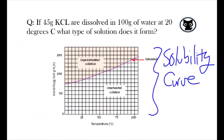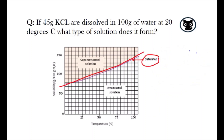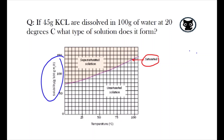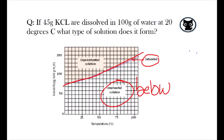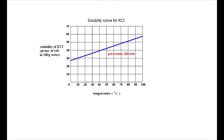To determine what kind of solution we have, we can use a solubility curve for KCl. A solubility curve helps plot the relationship between temperature and solubility of a particular solute. A line on the curve represents a saturated solution, with the x-axis representing the temperature of the solution, and the y-axis representing the solubility in terms of the mass of the solute per 100 grams of water. Anything above the saturated line is said to be supersaturated, while any point below is unsaturated. Looking at the solubility curve for KCl, we see that at 20 degrees Celsius, the solution is expected to be saturated close to 30 grams.